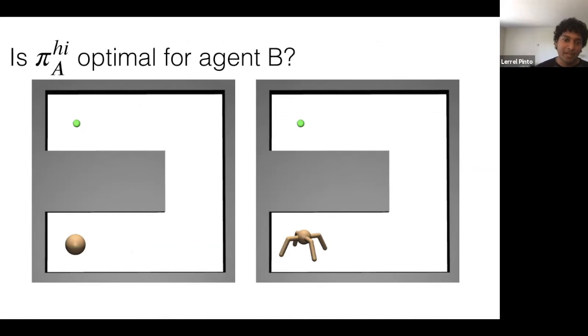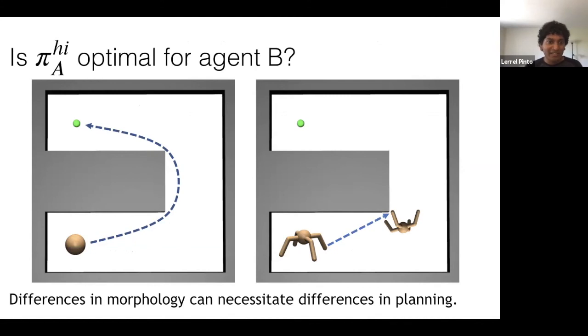So one of the reasons for this is that the high-level of agent A may not be optimal for agent B. So let's say agent A was a point mass and its goal was to reach the green dot. Now, as it's doing so, it will try to cut as close as possible to the corners, because that minimizes the amount of time it takes to reach the green goal. But if the ant agent does exactly the same thing, it will hit the corner. And if it hits the corner, it may turn over. And so in some sense, the difference in morphology necessitates a difference in the high-level itself. So how do we make the high-level change?